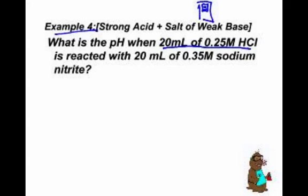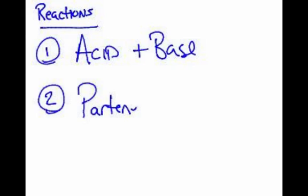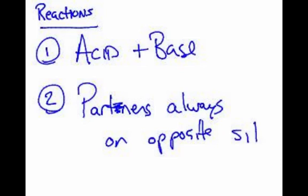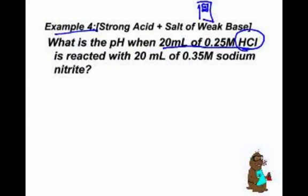What's the pH when 20 milliliters of 0.25 molar hydrochloric acid reacts with 0.35 molar sodium nitrite? First of all, this is very important to note: it's all about the reactions. If you get the reactions down, the math is easy. Rule number one: acids react with bases. Acids do not react with more acids. Rule number two: partners always on opposite sides of the arrow. What do I mean by a partner? It's like a weak acid and its conjugate, things that are only different by a hydrogen ion.